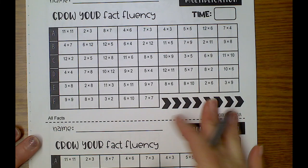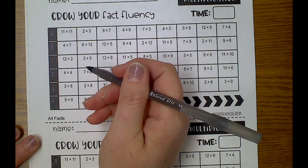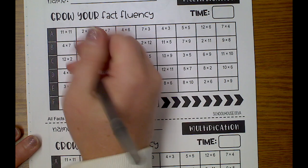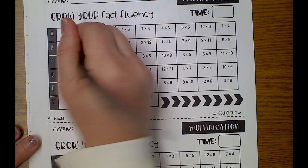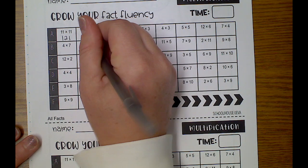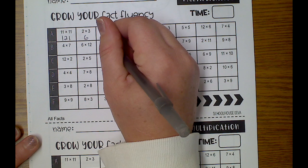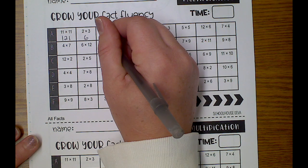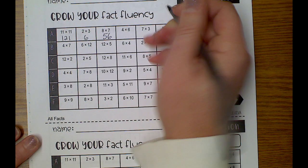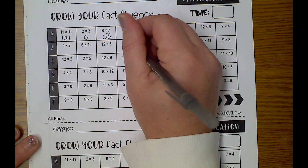Alright, this is week 6, day 4. 11 times 11 is 121. 2 times 3 is 6. 8 times 7 is 56. 4 times 6 is 24.